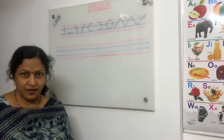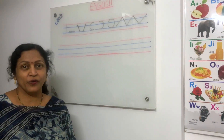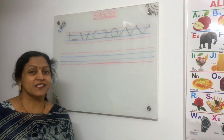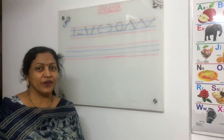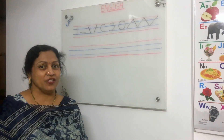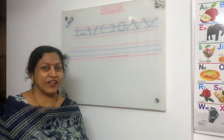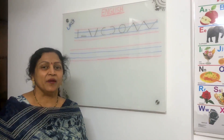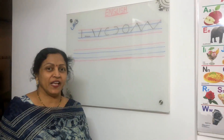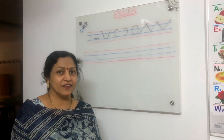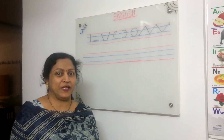Children, now we are going to write letters A to H. These are small letters. Okay children, before writing we will revise letters and pictures.